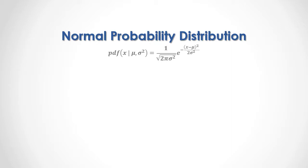As a formula, the normal probability distribution density function is equal to 1 divided by the square root of 2 times pi multiplied by sigma squared. Sigma corresponds to the standard deviation and sigma squared corresponds to the variance, which is then multiplied by the exponential of minus, and within the numerator we have x — the continuous random variable — minus mu, which is its arithmetic mean, that result to the power of 2, and then we divide it by 2 times sigma squared.